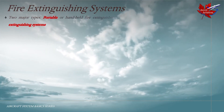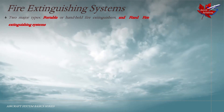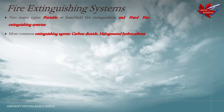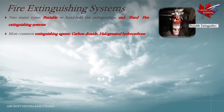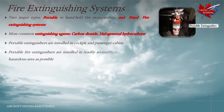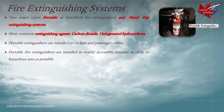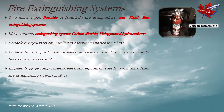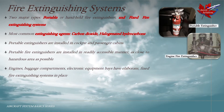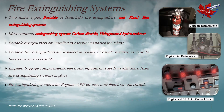There are two major types of fire extinguishing systems installed on aircraft: portable or handheld fire extinguishers, and fixed fire extinguishing systems. The most common fire extinguishing agents used on board aircraft are either carbon dioxide or halogenated hydrocarbons. Portable fire extinguishers are installed in cockpits and passenger cabins in a readily accessible manner and as close to the hazardous area as possible. Engines, cargo compartments, electronic equipment bays, and similar areas have more elaborate fixed fire extinguishing systems in place. The fire extinguishing systems for engines, APU, and similar systems can be controlled from the cockpit using the fire control panel.